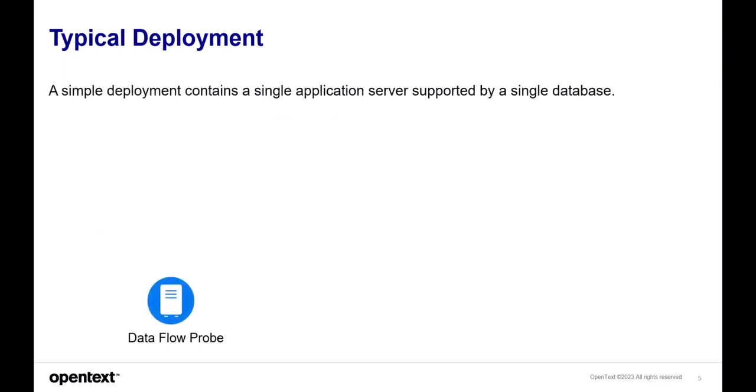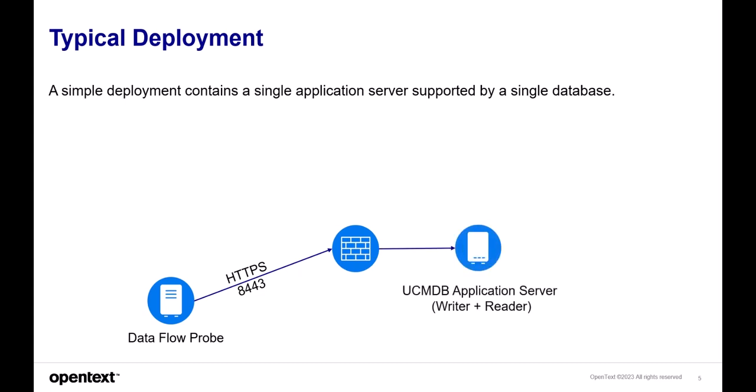A typical deployment contains a single application server supported by a single database. In this case, the UCMDB Dataflow Probe usually goes through a firewall via HTTPS on port 8443. All communication from the Dataflow Probe to the UCMDB Server is started by the Dataflow Probe itself. The UCMDB Server is then connected via JDBC to a database. This is a typical deployment in a pre-production, test, or development environment.